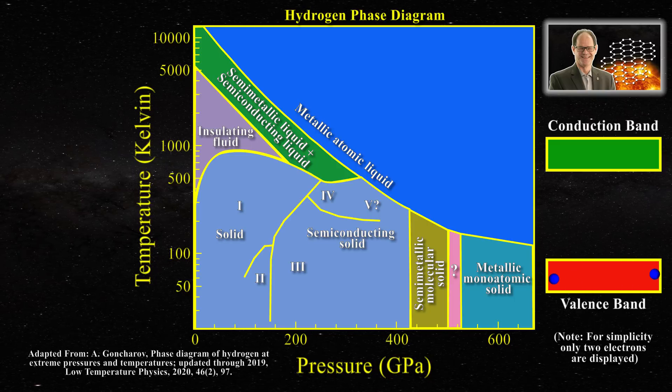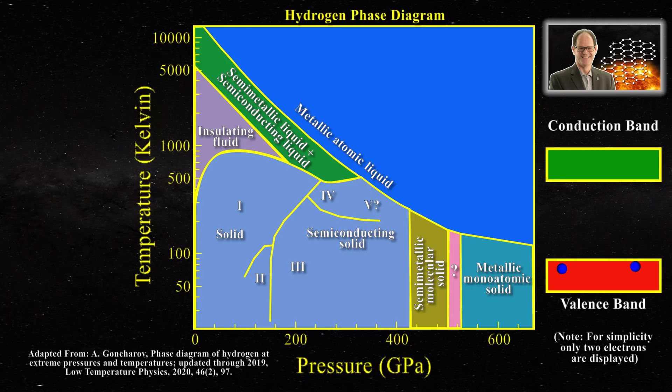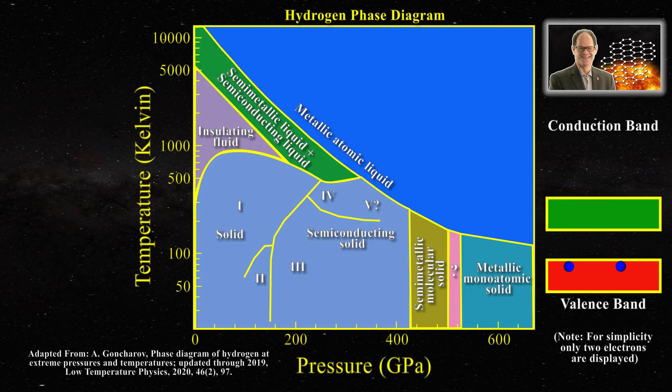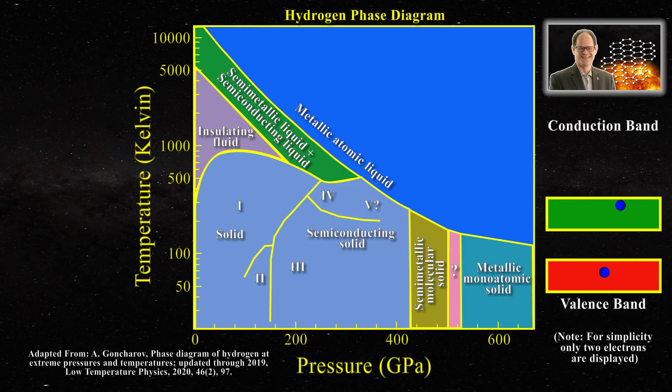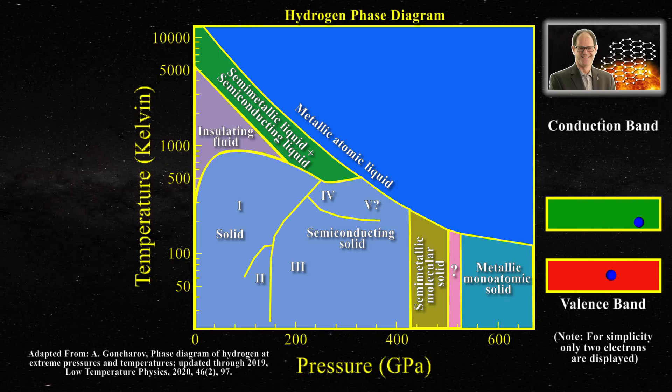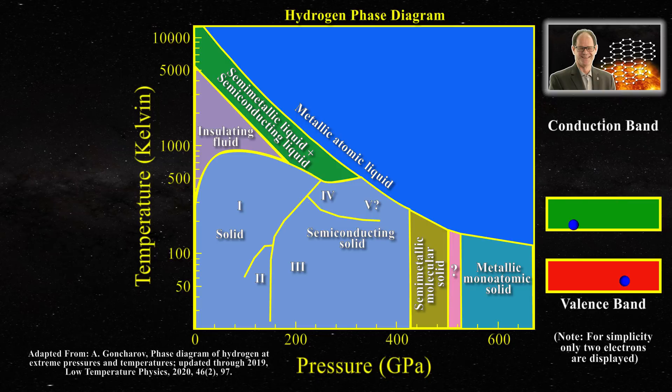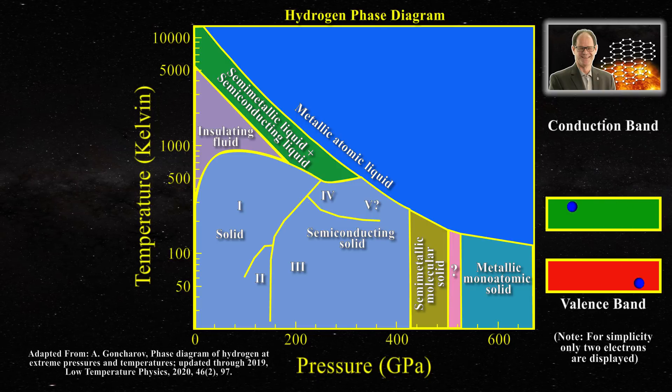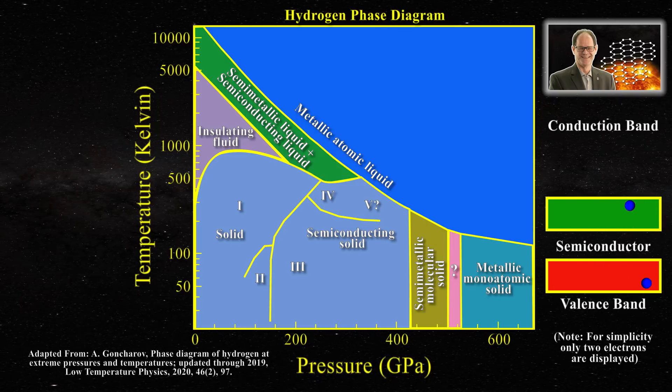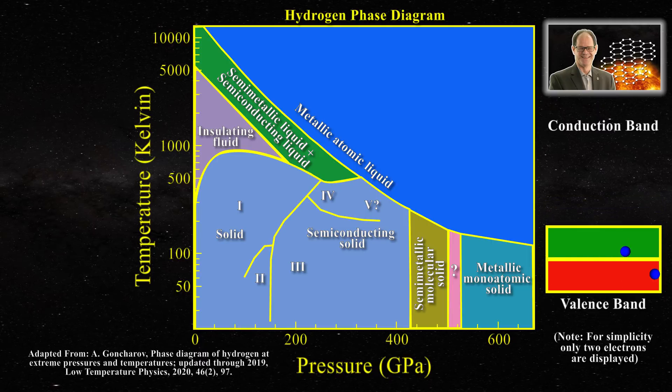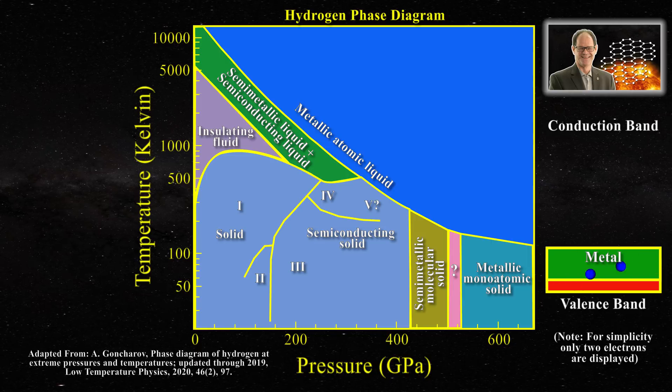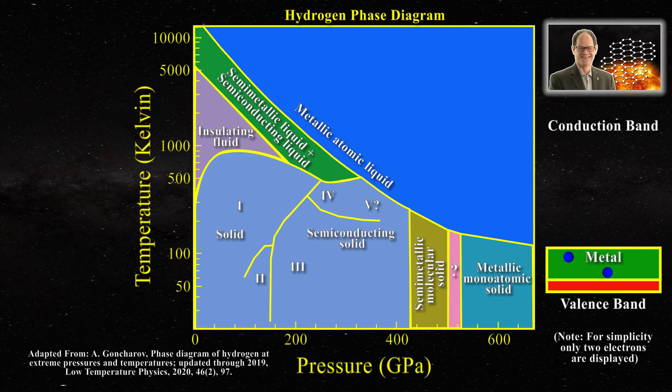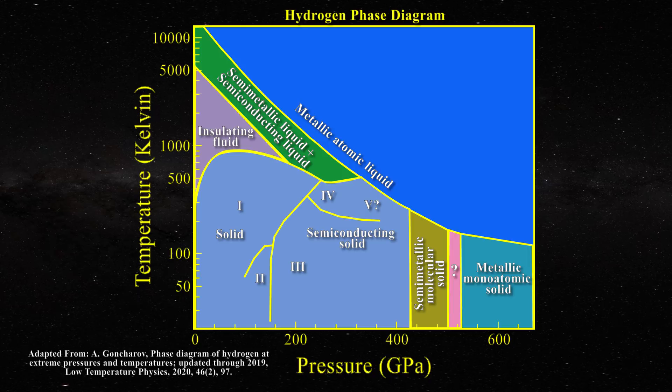Now, when pressure is increased, the conduction band will begin to fall, making it easier for the valence electrons to jump into this band with increasing temperature. If this happens when the valence and conduction bands are still separated in energy, one gets a semiconductor. When the conduction band first reaches the valence band, one gets a semi-metal. With even more pressure, one gets a metal as the conduction band falls to the energy level of the valence band.